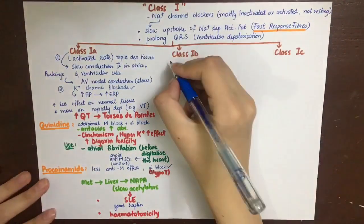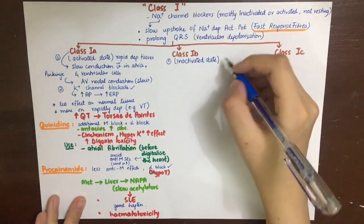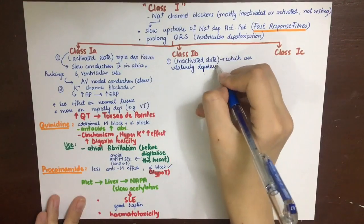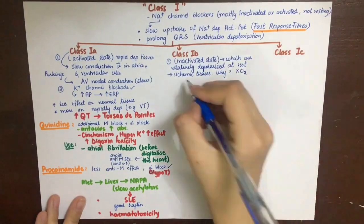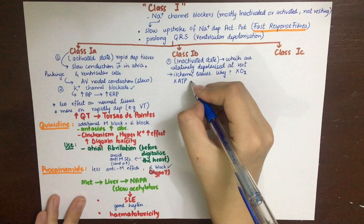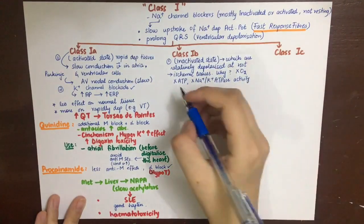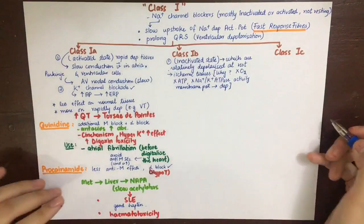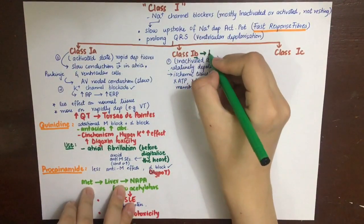Now the class 1b drugs: they mainly block sodium channels in the inactivated state, making them specific for tissues that are relatively depolarized at rest — namely, ischemic tissues. In ischemic tissue, lack of oxygen means no ATP, so sodium-potassium ATPase cannot work, membrane repolarization is ineffective, and the cell remains in a constant depolarized state. Therefore, class 1b drugs are best used post-MI because they are specific for depolarized or ischemic cells.